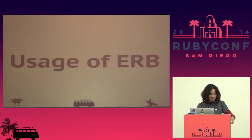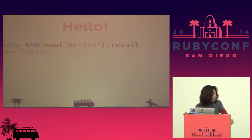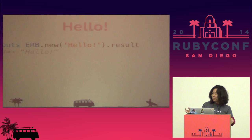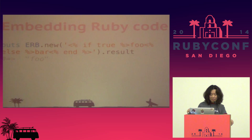Let me show you how to use ERB. This is the basic usage: ERB.new — give a template string into ERB.new and call the .result method on the instance. This will return the Ruby-embedded string. Pretty easy, right? This is how we can embed Ruby expressions, as you know.